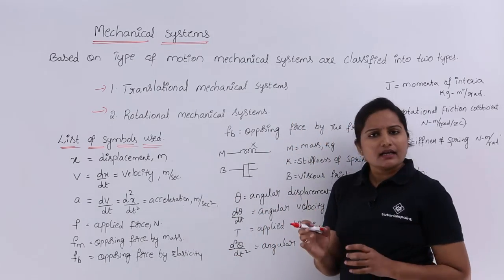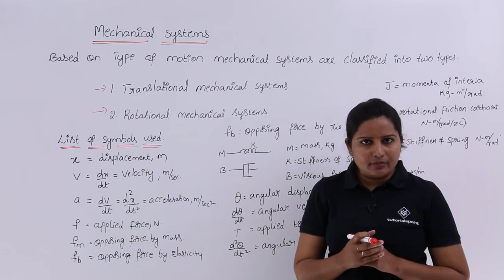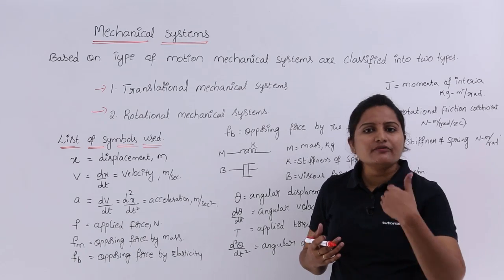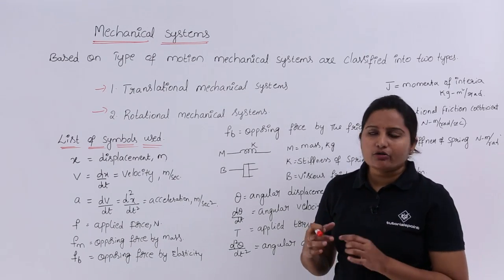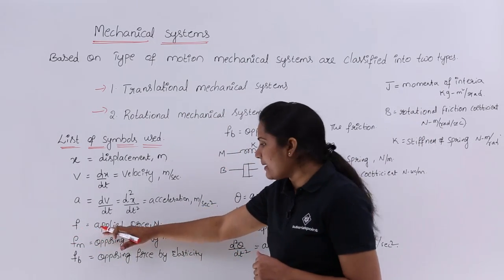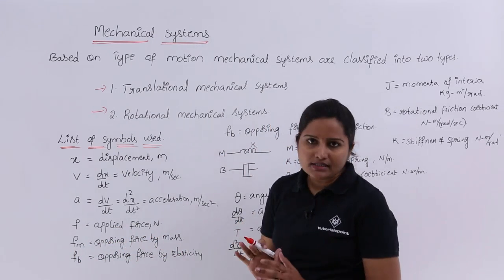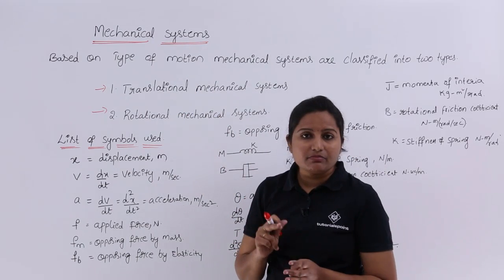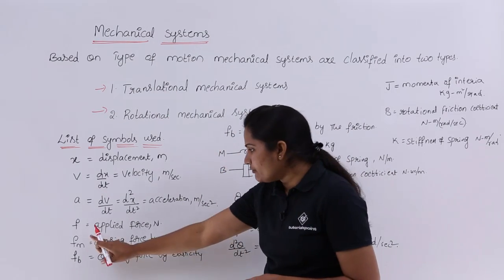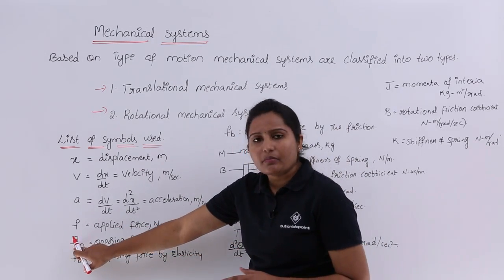In both mechanical systems, when we apply a force on any body or mass, we have an opposing force by that body. If F is the applied force calculated in Newtons, Fm is the opposing force by the mass. We have three basic elements — mass, spring, and dashpot — in the translational mechanical system. When we apply force on the mass, the opposing force by that mass is M.